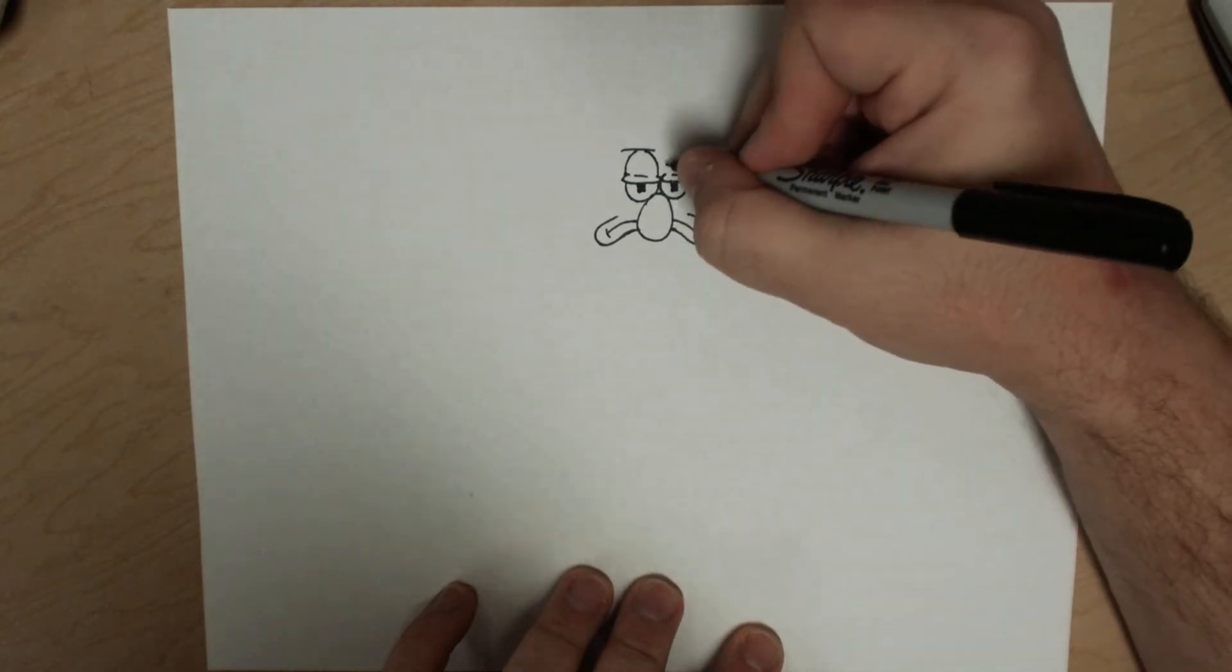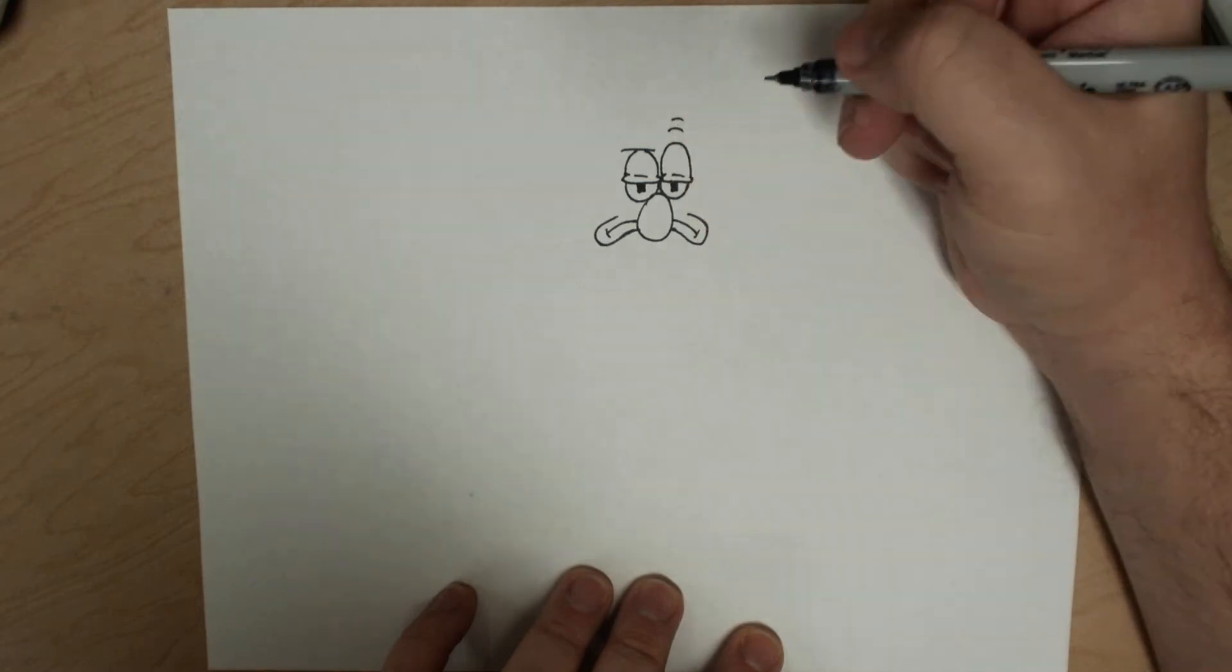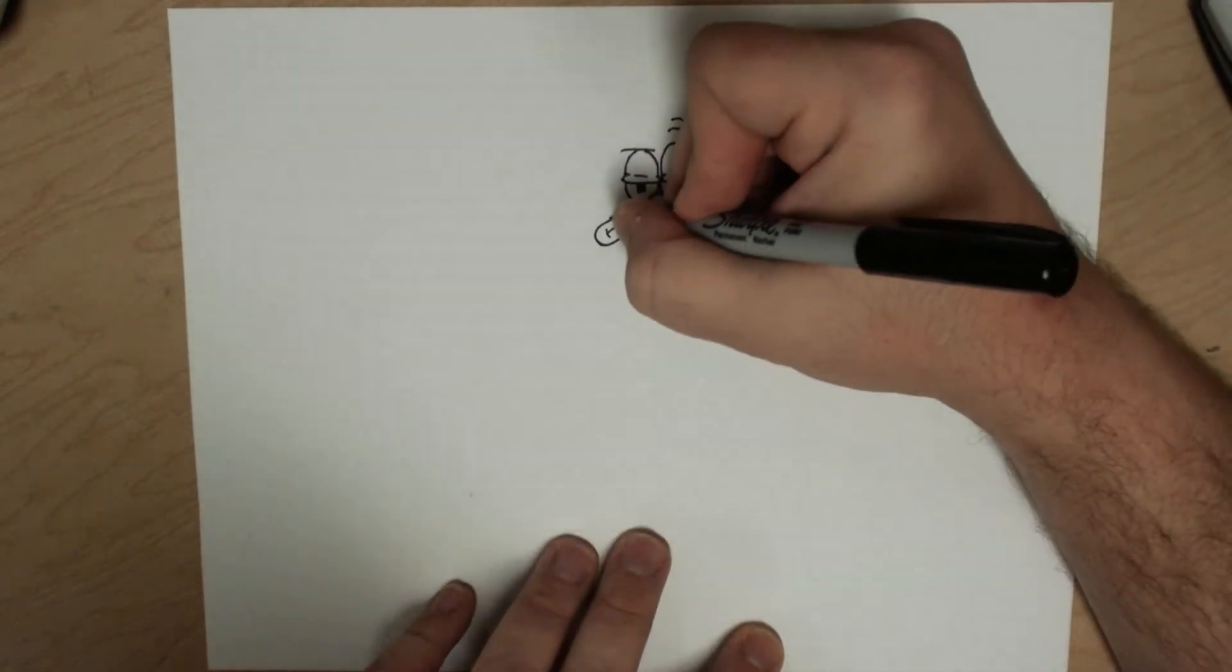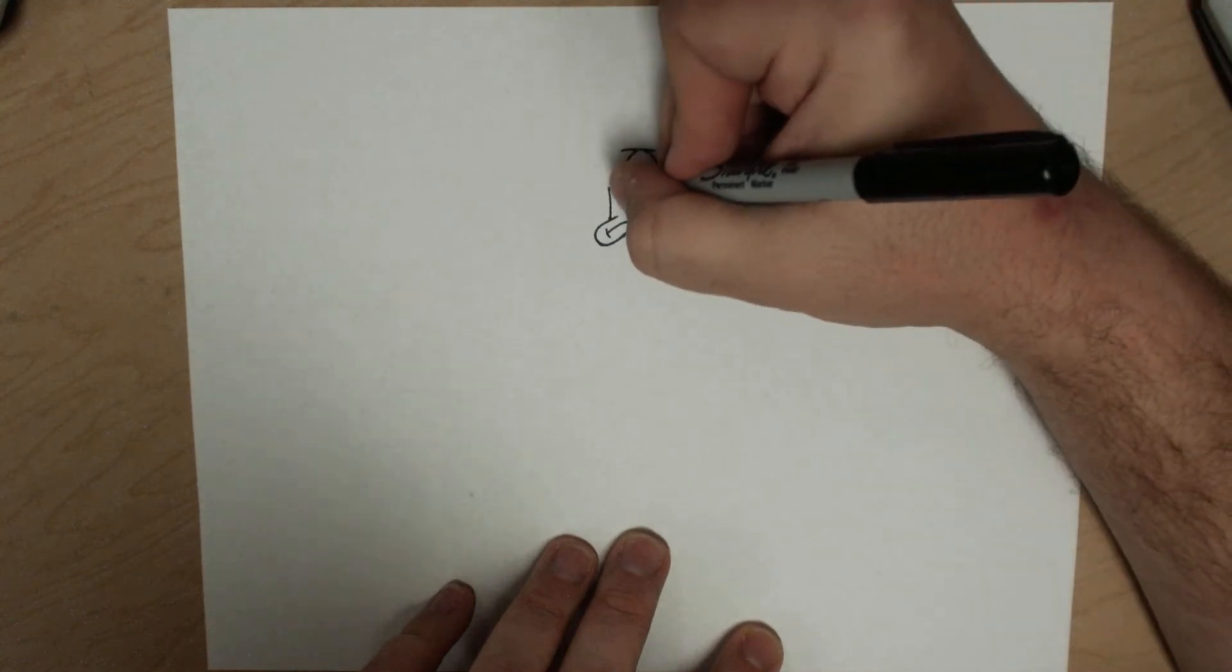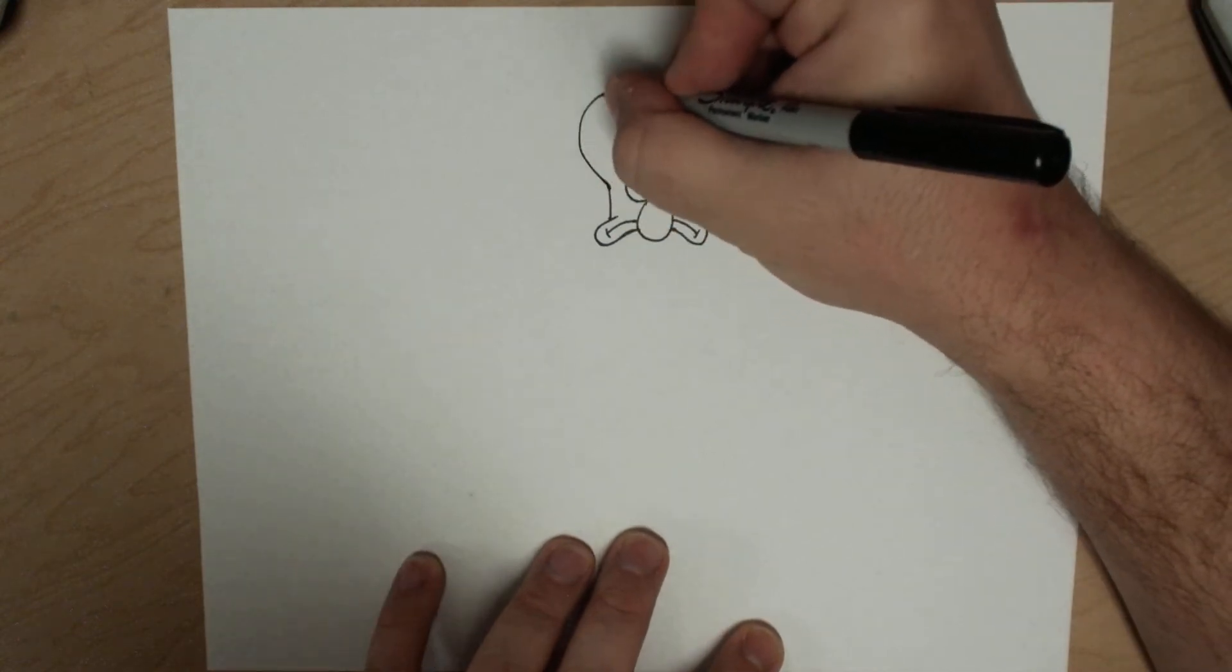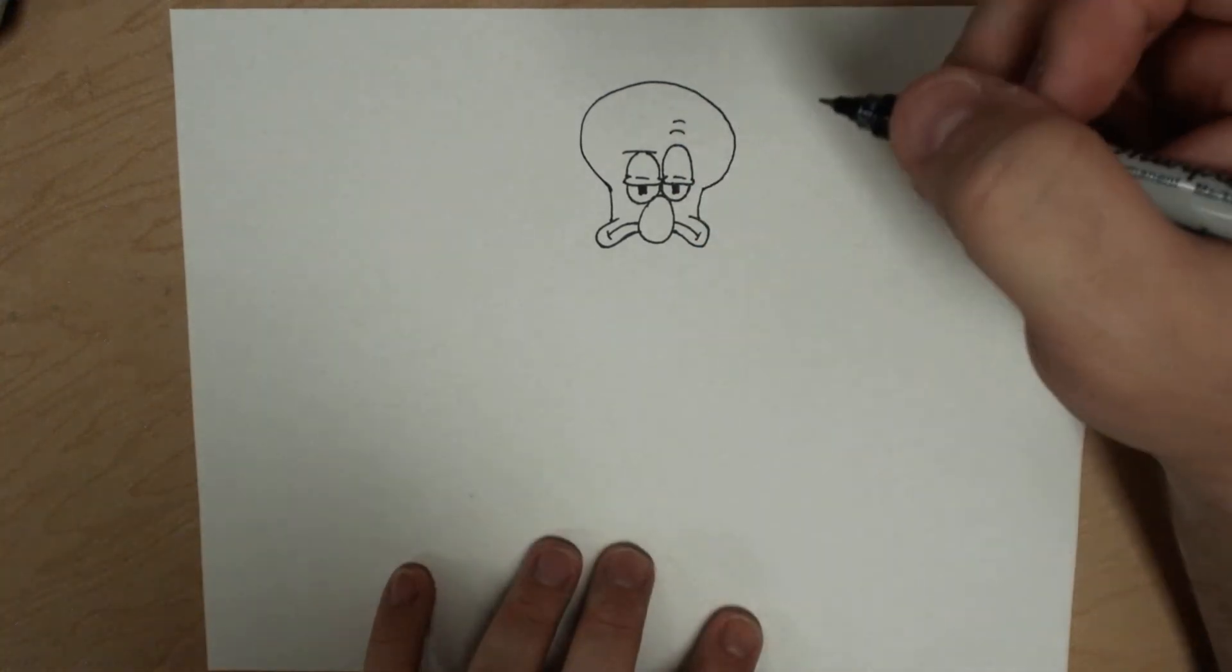Up here we're going to do a line, because his eyelid on this one almost looks like he's closing his eye, because he is not happy. Probably mad at Spongebob again, right? Do some squares for his eyes, little rectangles. Do a little line in there. Let's not forget this eyelid.